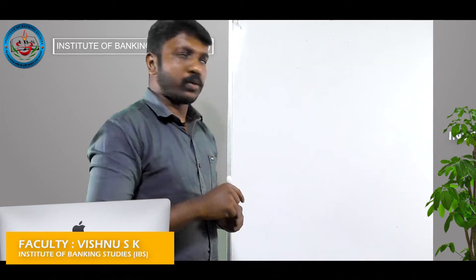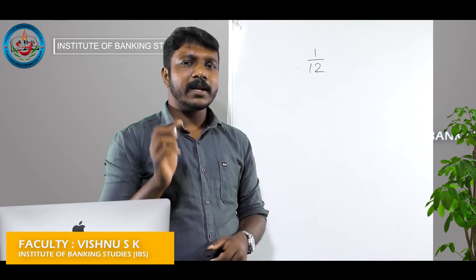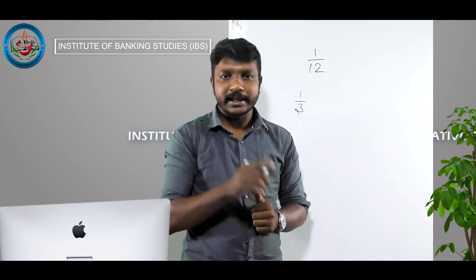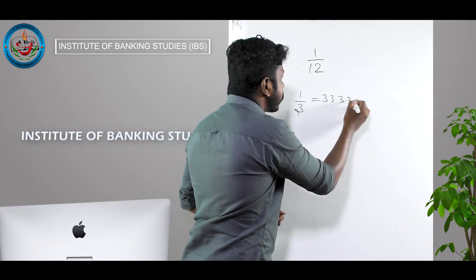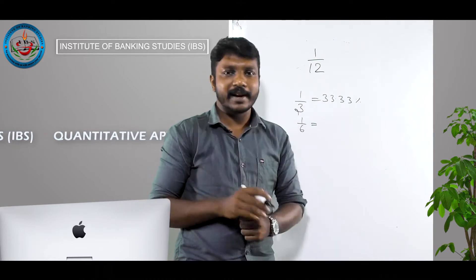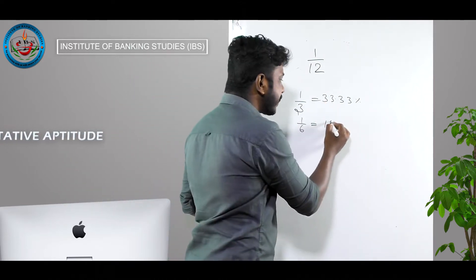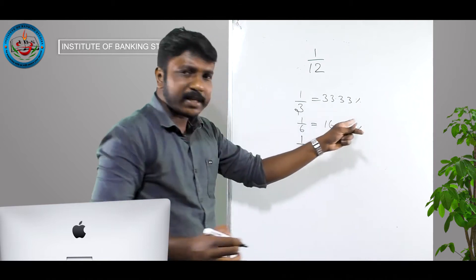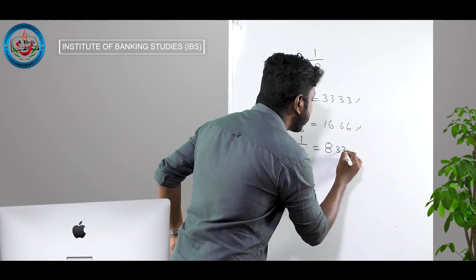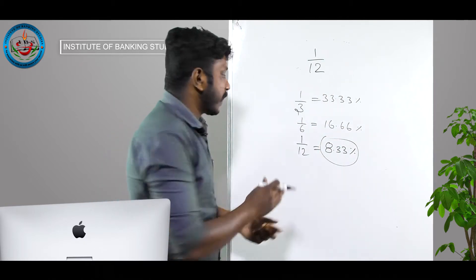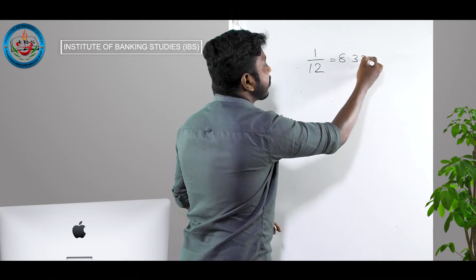Let's find the value of 1/12. We connect it step by step: 1/3 is 33.33%. Then 1/6 is half of 1/3, so half of 33.33 is 16.66%. Now 1/12 is half of 1/6, so half of 16.66 is 8.33%. So we have identified 1/12 as 8.33%.